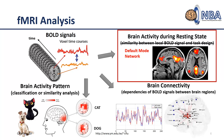The most popular network identified during resting state is the default mode network. That means even when you let subjects do nothing, the brain still activates a network called the default mode network, which is very important for self-referential experience — thinking about experiences or things highly related to yourself. So we still have a way to identify brain activity during resting state.